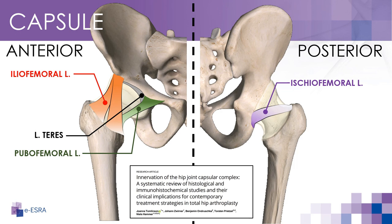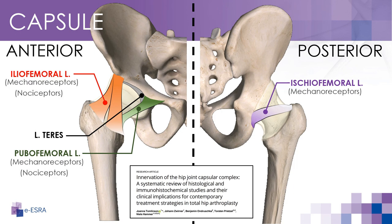The ischiofemoral ligament runs from the ischium bone to the femur and helps to prevent excessive internal rotation of the hip joint. The sensory fibers in the ligaments that form the joint capsule of the hip play an essential role in providing proprioceptive and nociceptive information to the central nervous system, which is critical for maintaining joint stability and avoiding injury.